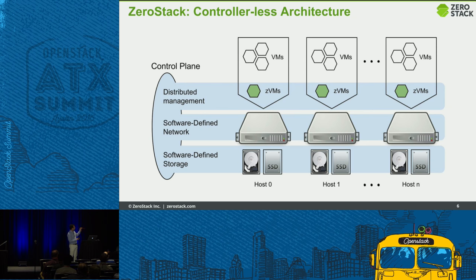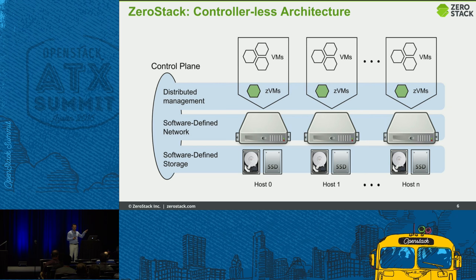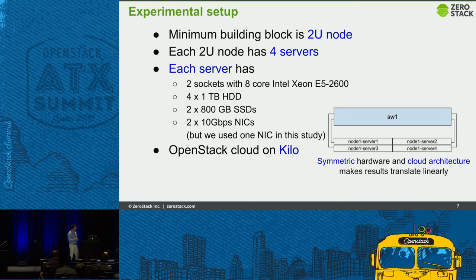You can have a block of one 2U block with four servers, with a control plane running across these nodes that handles management, monitoring, self-healing, and all private cloud services. There is no dedicated controller in the environment. If one node goes down, the control plane detects it and automatically starts that service on another node. For storage, we have different configurations — local storage pools based on SSDs and disks, as well as shared storage across hosts.